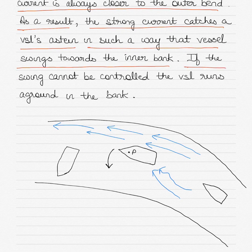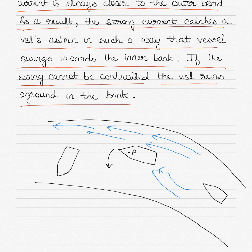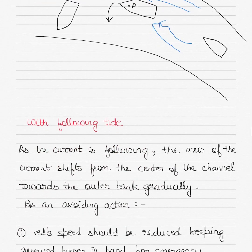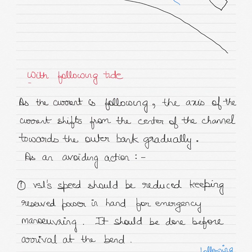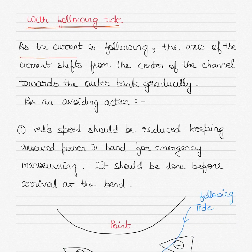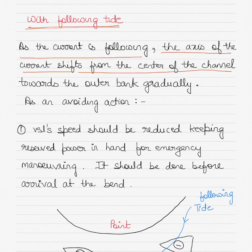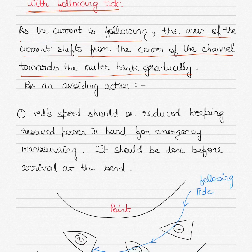If the swing cannot be controlled, the vessel will run aground on the inner bank. With a following tide, as the current follows the vessel, the axis of the current shifts from the center of the channel towards the outer bank gradually.